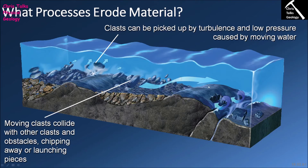For example, if there is a ridge of exposed rock coming into the river channel, a clast picked up and thrown against that exposed rock with enough force can chip pieces off, creating new clasts while also eroding the river channel. Over time, this raised area will steadily be eroded away, creating a smoother channel.